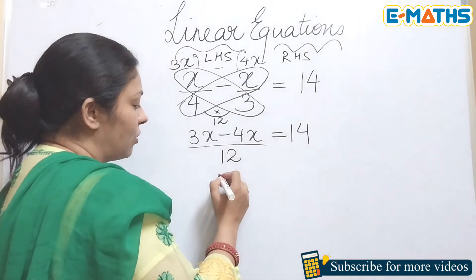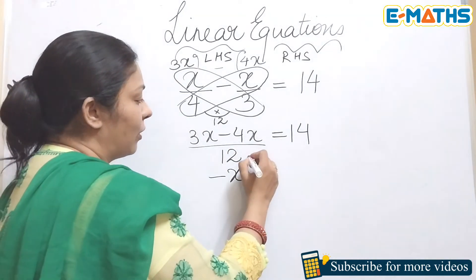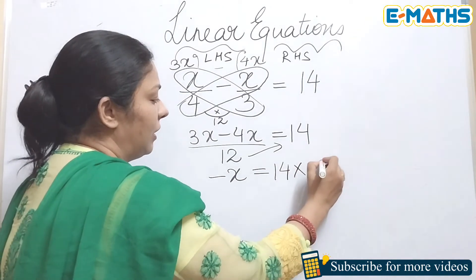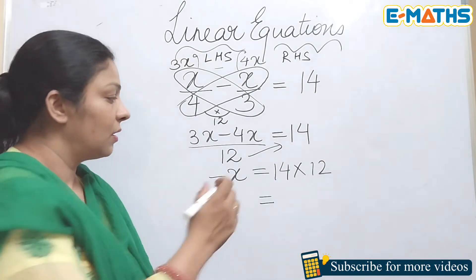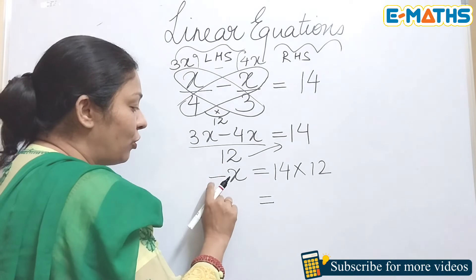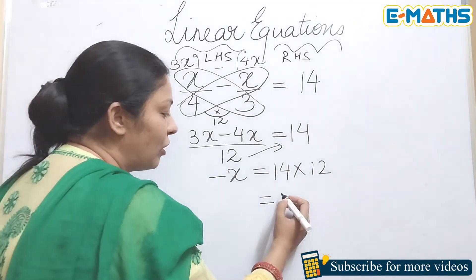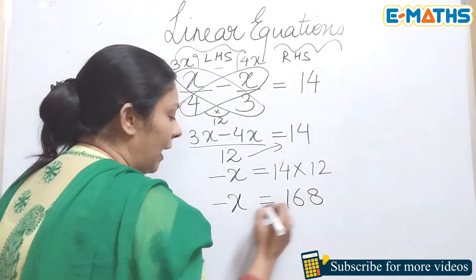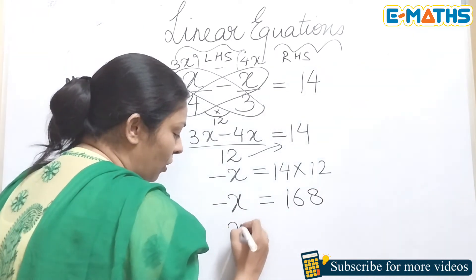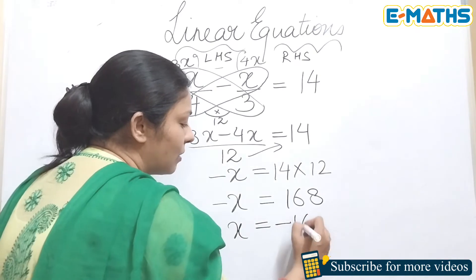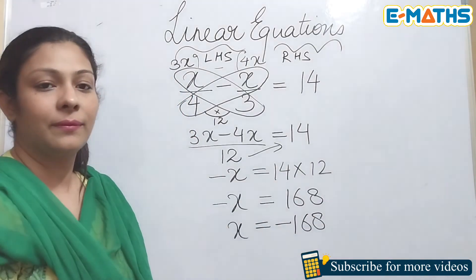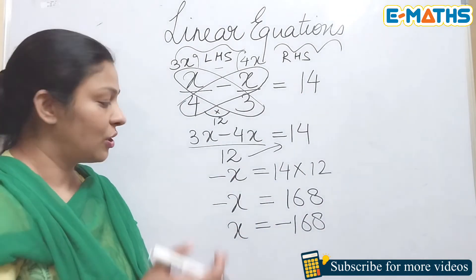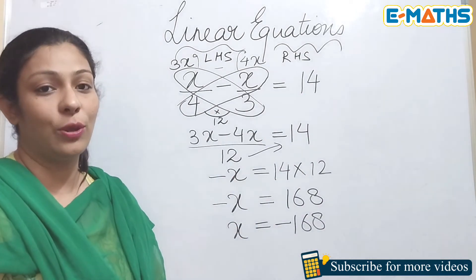This is 3x minus 4x equals to 14, which will remain the same. You can either solve this - this will be minus x - and you can cross multiply this on the other hand side, so 14 into 12. After writing this much, you need to transpose the sign also. When you solve this, you will get minus x equals to 168. Now transpose this minus sign also on the other hand side, so this will be minus 168. If you are removing a minus sign from here, the other side will have that minus sign.